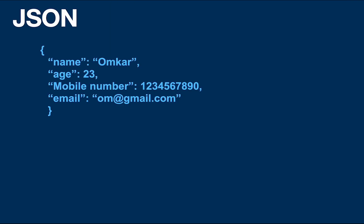The most common format of data used in transfer is JSON format. JSON stands for JavaScript Object Notation. This form of data is very easy to understand and access in frontend applications. An example of JSON data is shown on the screen — a user with name OMCART, age 23, mobile number, and email. This data can be used at the frontend to show to users and they can interact with the data.